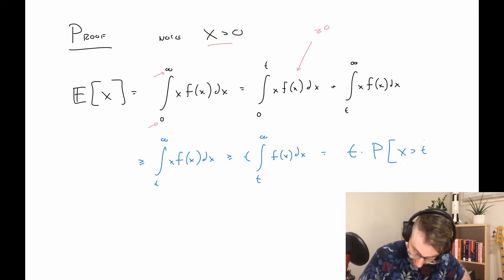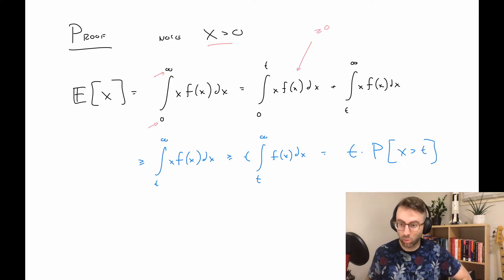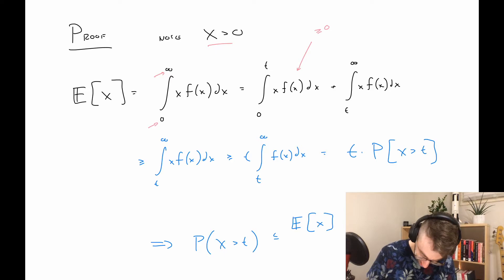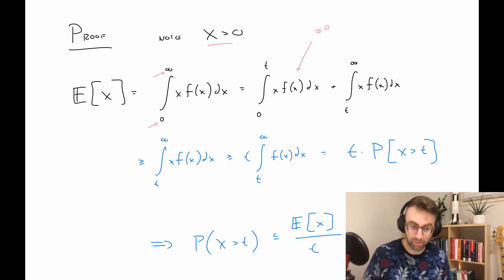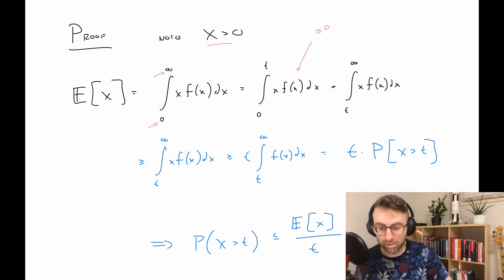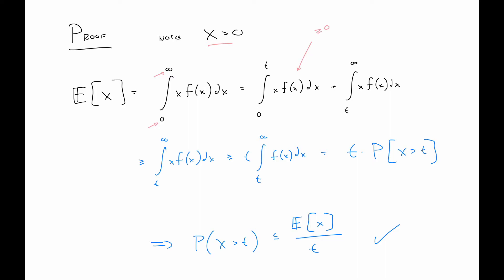Finally we have t times, well that integral is basically—oh hold on, sorry, this shouldn't be a zero, that's clearly a t, otherwise what I was just about to say was not true. That integral is exactly the definition of the probability that X is greater than t. After a little bit of rearrangement, we end up with exactly Markov's inequality.